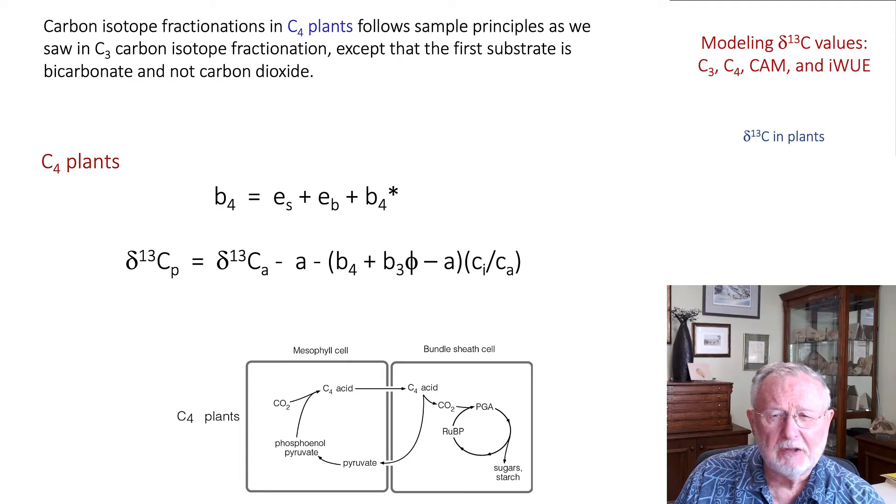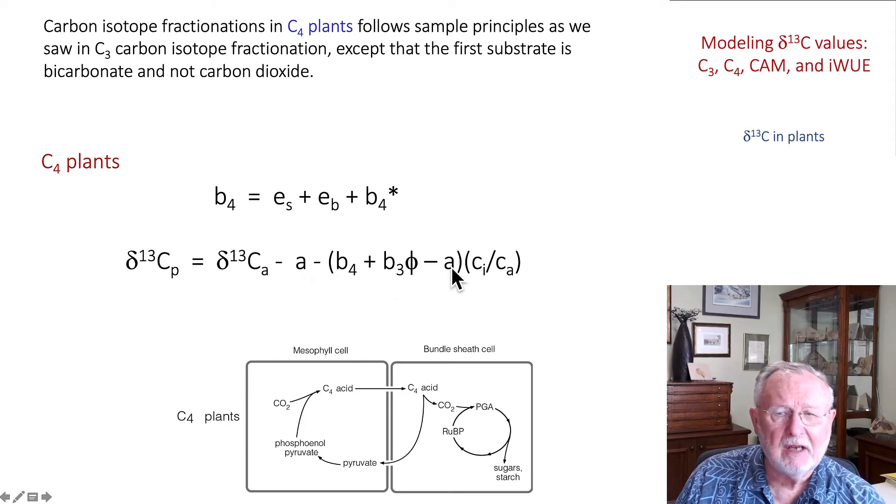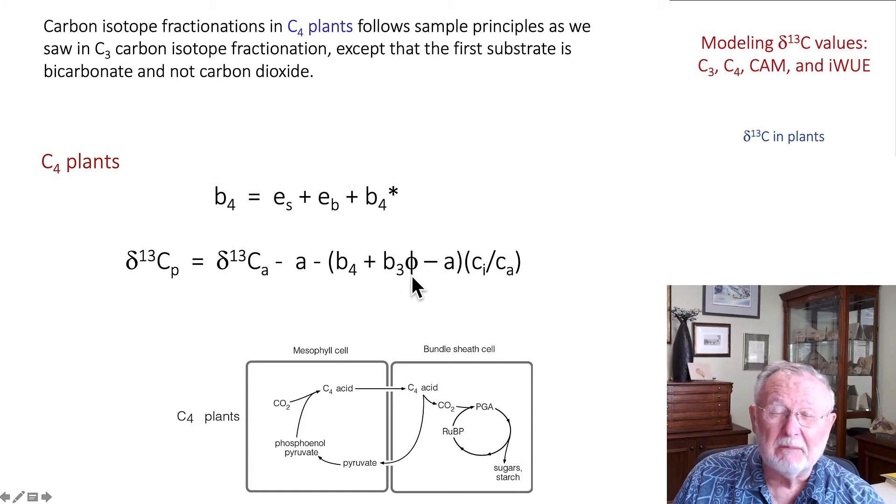Otherwise the equation is very similar. Carbon isotope ratio of a C4 plant depends on the substrate minus B and B3 minus A, as for C4 plants, plus the fractionation associated with the conversion of CO2 to bicarbonate. The CO2 fractionation associated with Rubisco is modified in C4 plants by this term here, theta.